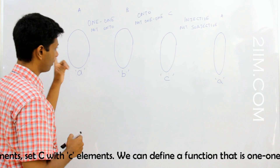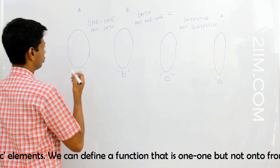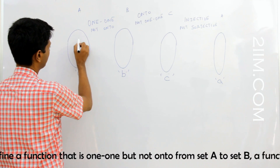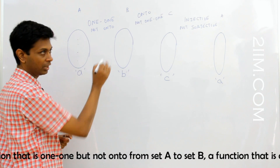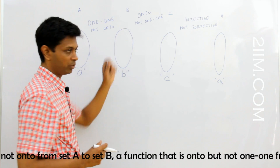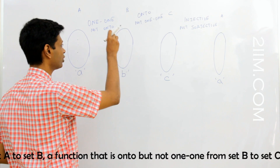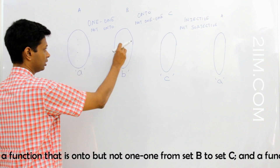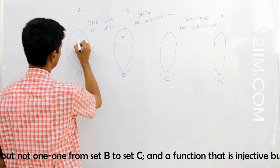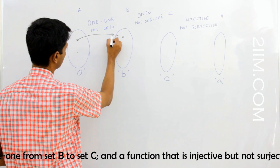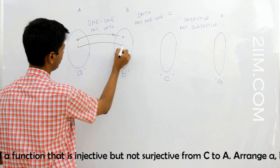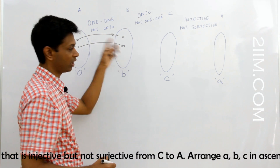A to B is 1-to-1 but not onto. That means, to start with, this is a function, so every element in A is mapped to something in B. And this is 1-to-1 as opposed to many-to-1, which means every element in B that has been mapped onto from something in A is mapped from only one element in A. So if something here is pointing to an element in B, nothing else can point to that same element.